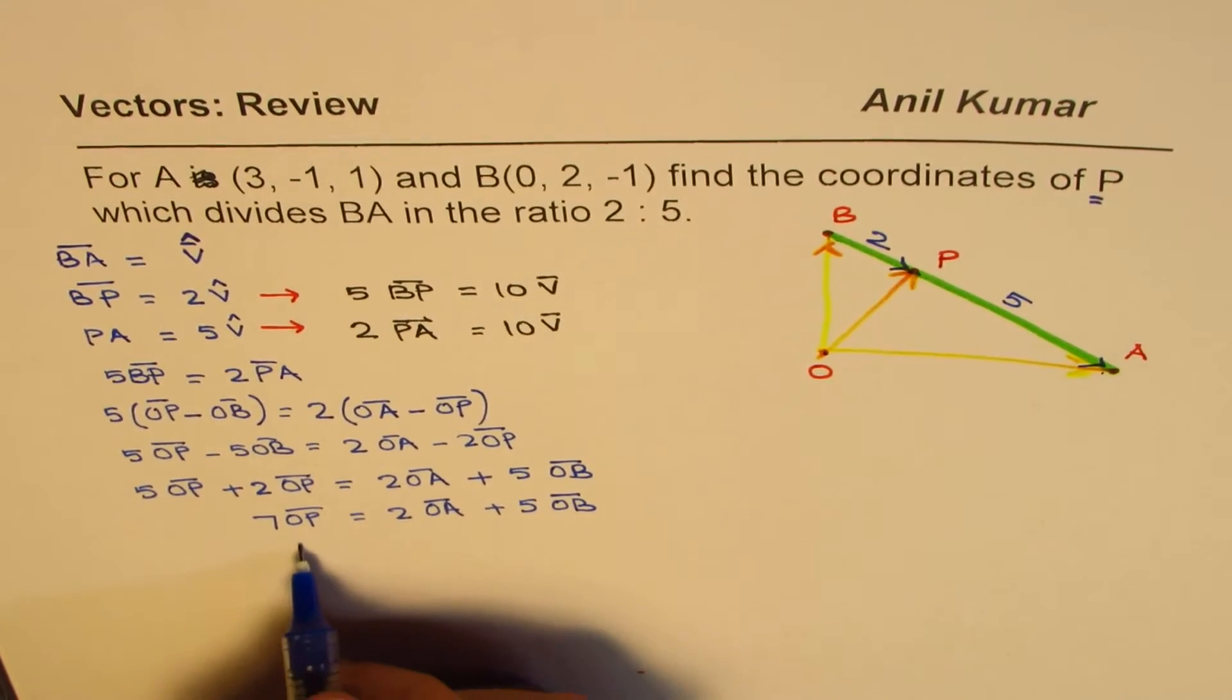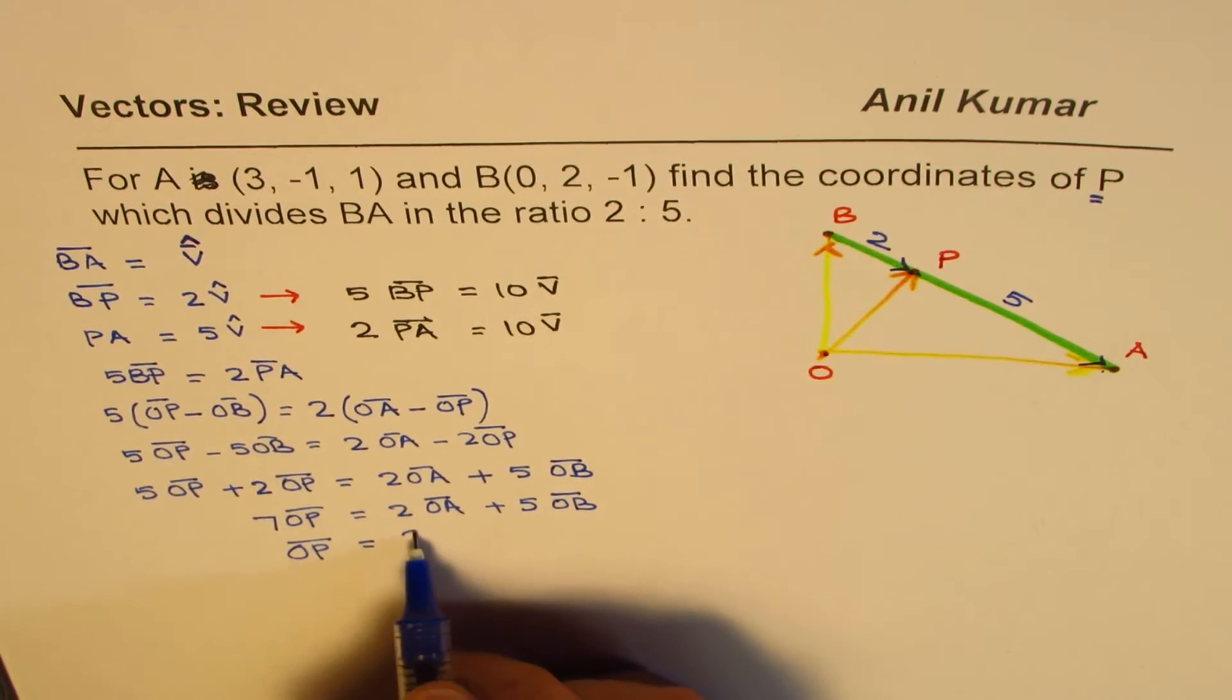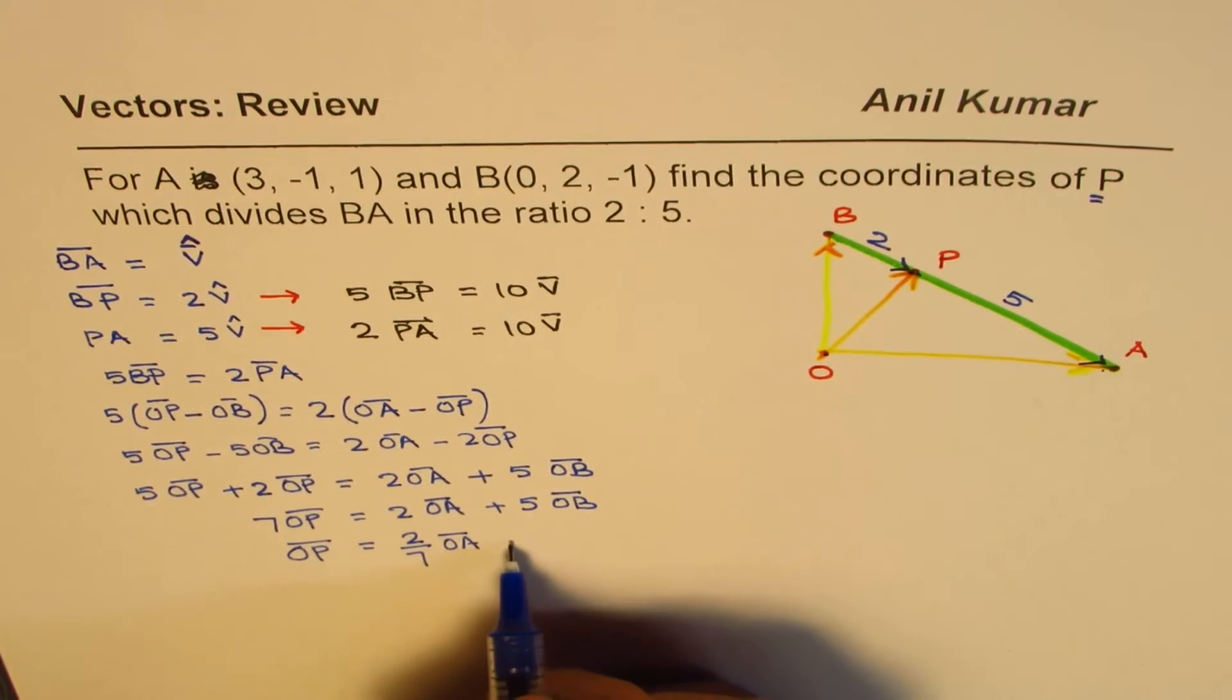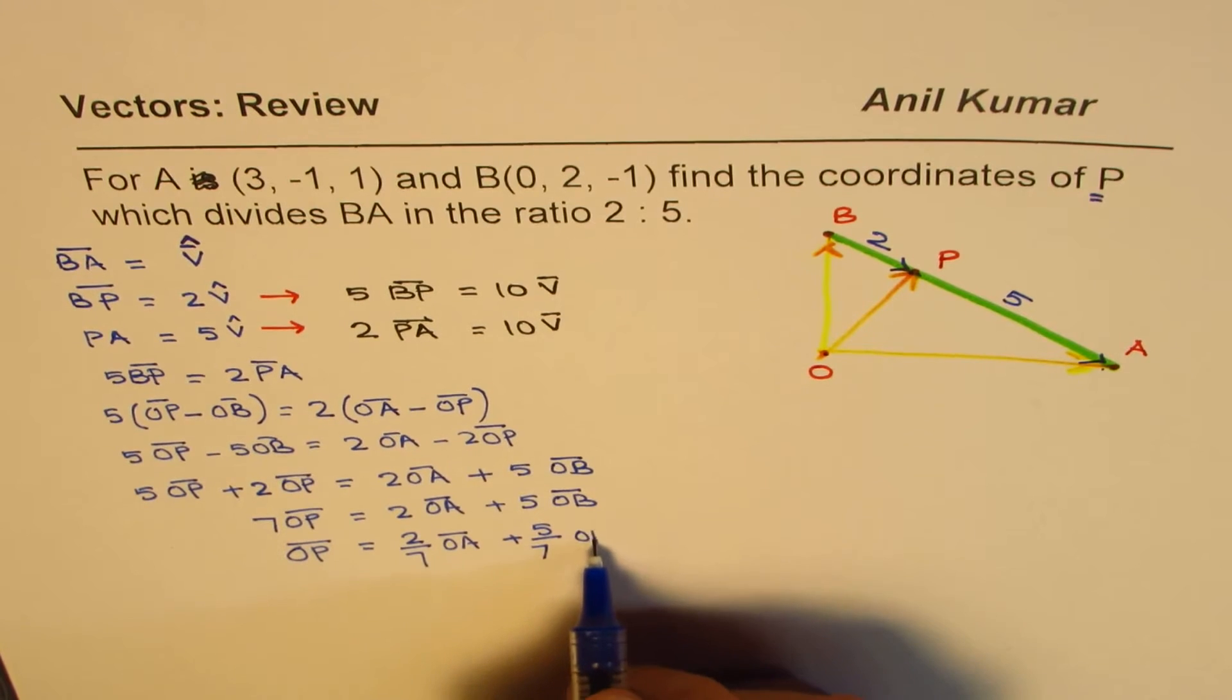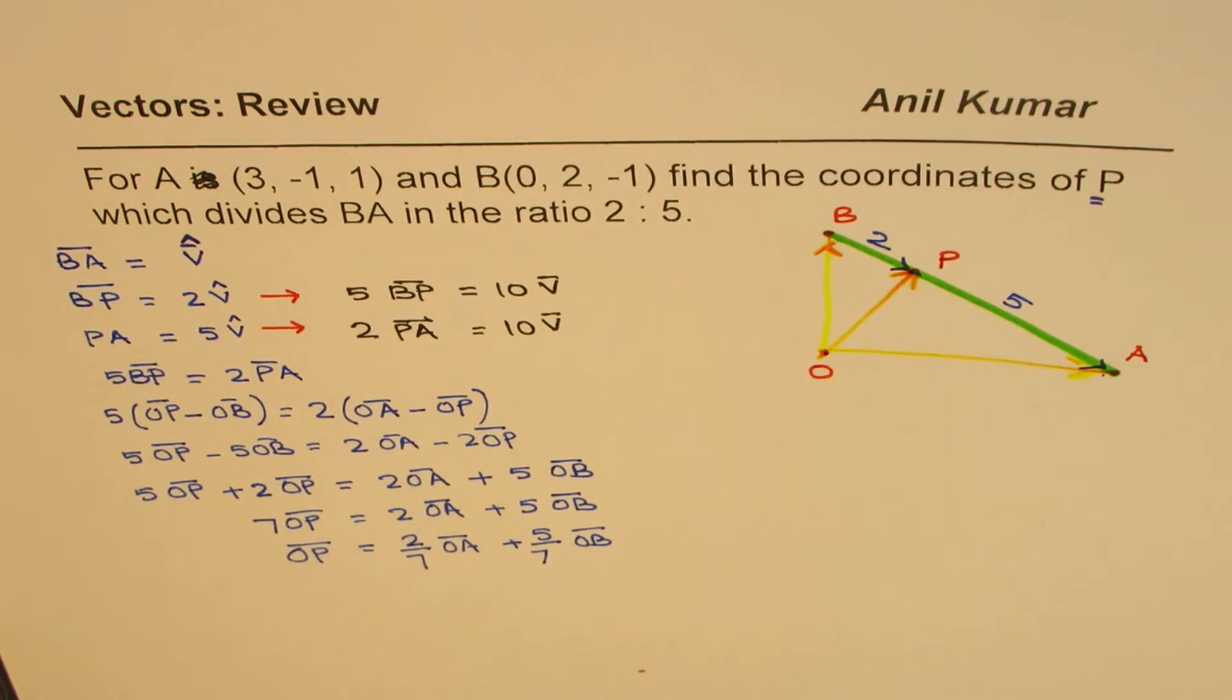Now that is 7OP. 7 times OP equals 2 times OA plus 5 times OB. Now that is OP, so the position vector OP is dividing both by 7. So we get 2 over 7 times OA plus 5 over 7 times OB.